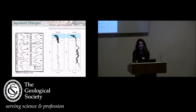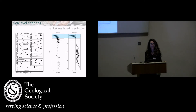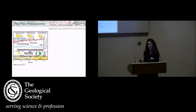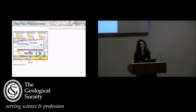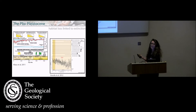Through geological time, habitat loss caused by sea level has been associated with extinction events. After the last mass extinction event, the most dramatic changes in sea level have occurred during the Pliocene and Pleistocene. Although these changes have been associated with extinctions — for example, regional extinctions in the Caribbean of some corals — it has been proposed that they didn't really have any effect on the survival of marine vertebrates.